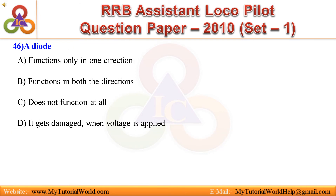Question 46: A diode — A. Functions only in one direction, B. Functions in both the directions, C. Does not function at all, D. It gets damaged when voltage is applied. Answer is: Functions only in one direction.